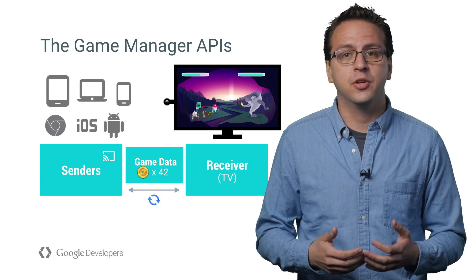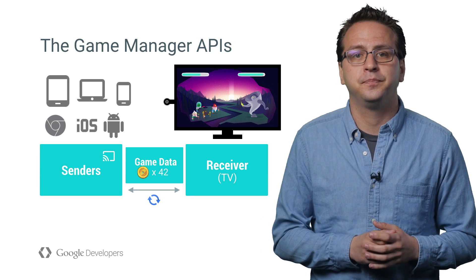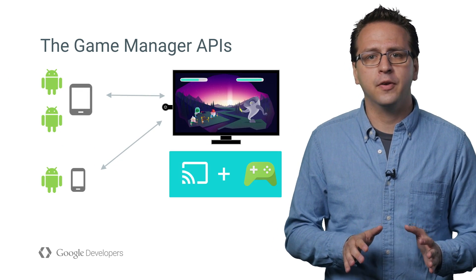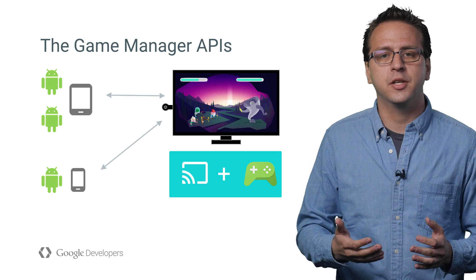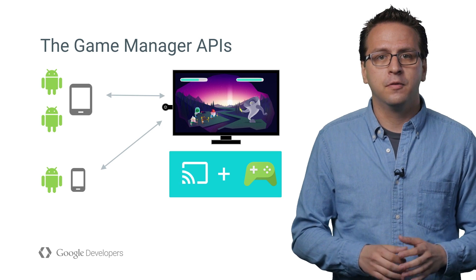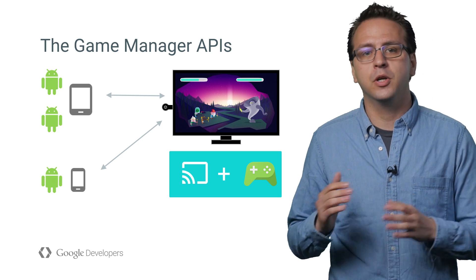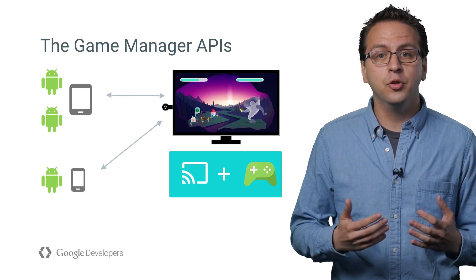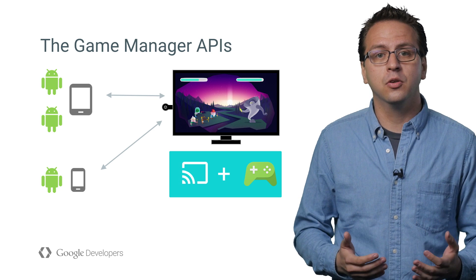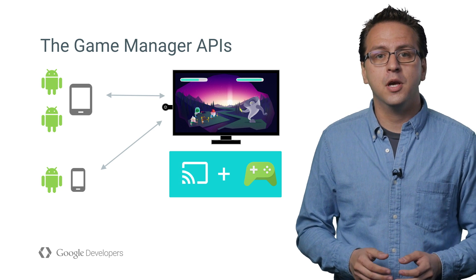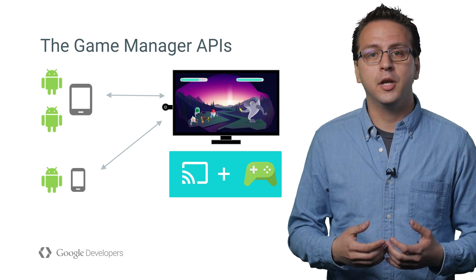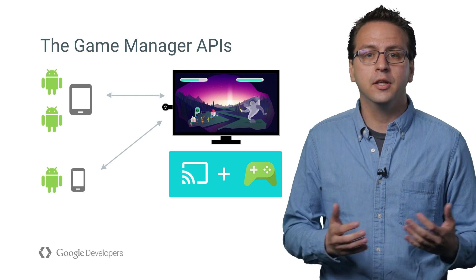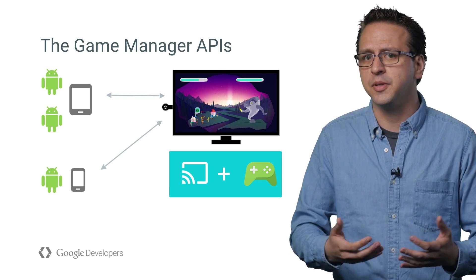Finally, there is information exchanged between the senders and the receiver. There are a bunch of different game types that can take advantage of the Game Manager API, from turn-based to real-time gameplay, which is why we support the ability to have multiple players on a single sender device. And all of these APIs can be used in combination with Google Play game services to implement features like leaderboards and achievements.